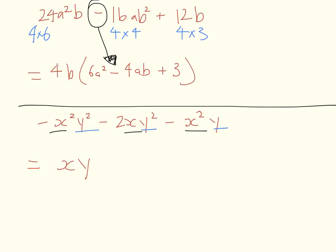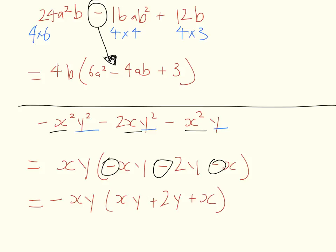But what we can actually do here as well is rather than writing three negative terms in the bracket like this, we can actually take this negative and say well they all are negatives. So what we can in fact do is say minus xy outside of xy plus 2y plus x.